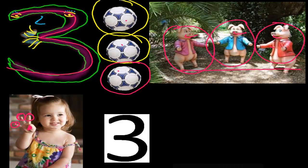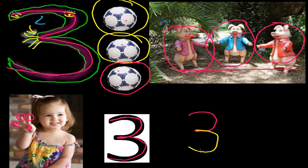Now let's learn how to write three — it's quite simple! We have to make a curve-like structure. First we write a little more than a half circle, and from that end point we write another half circle. So we make a little more than a half circle, and from the end point we write another half circle — and that is three!